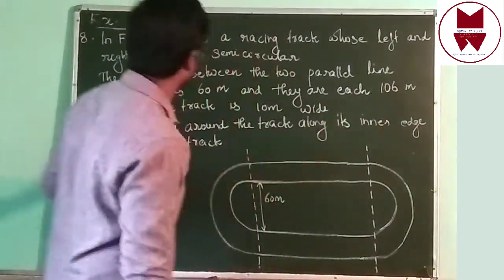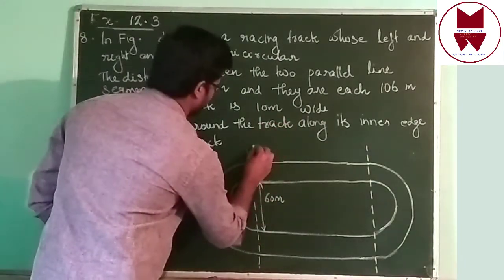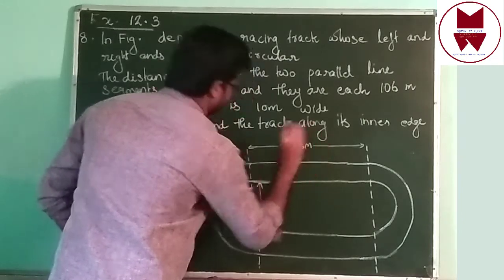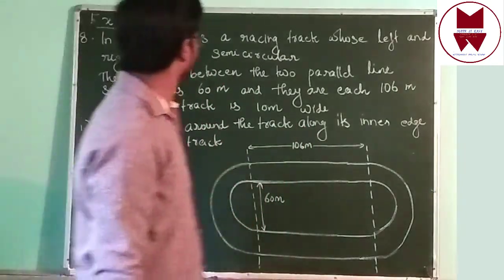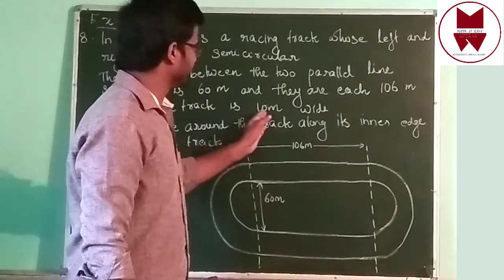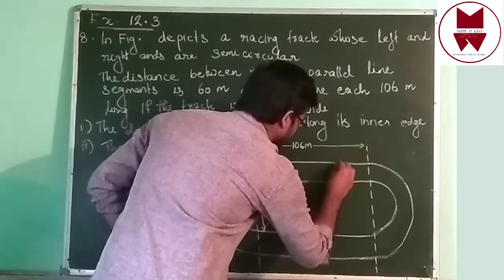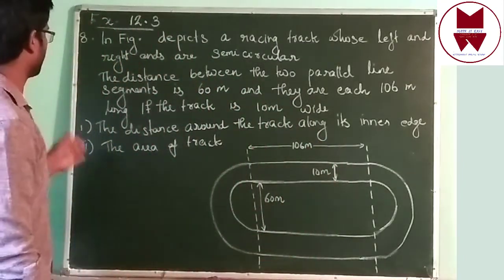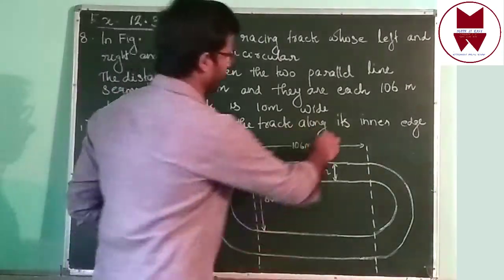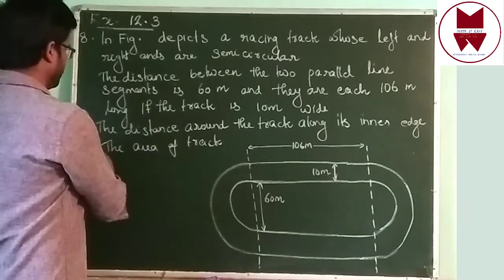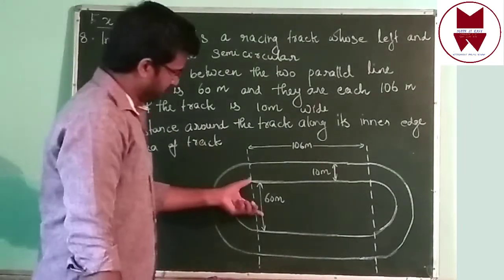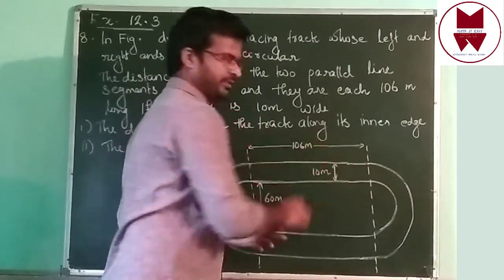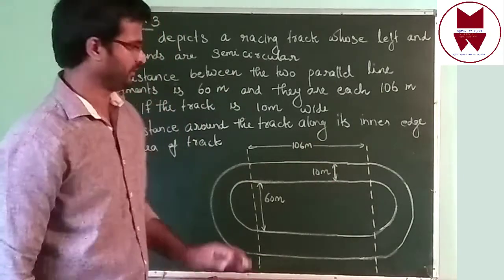Each parallel line is 106 meters long — that means from here up to here. If the truck is 10 meters wide. This is 10 meters wide. The distance between two parallel lines is 60 meters, the length of this line is 106, and this truck width is 10 meters.